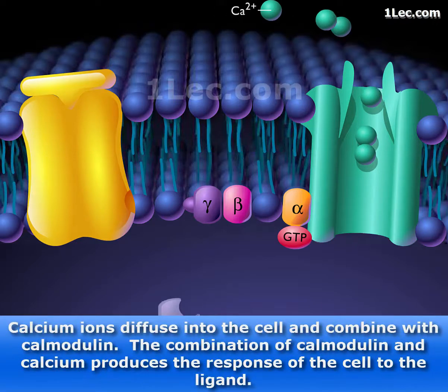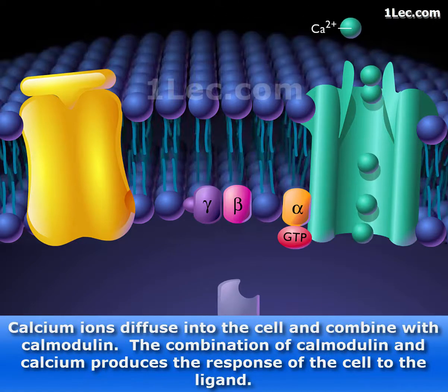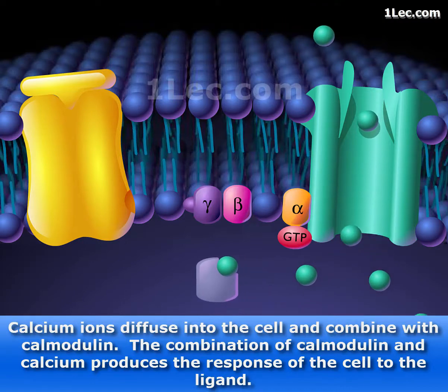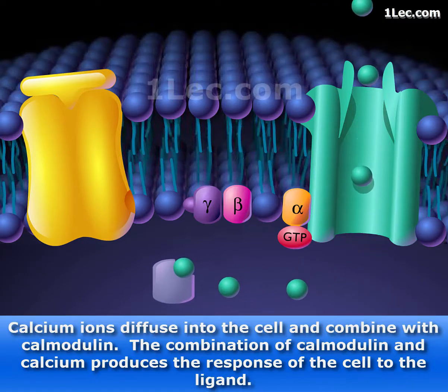Calcium ions diffuse into the cell and combine with calmodulin. The combination of calmodulin and calcium produces the response of the cell to the ligand.